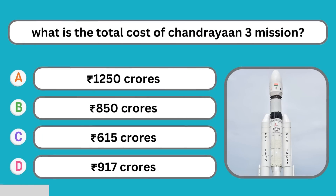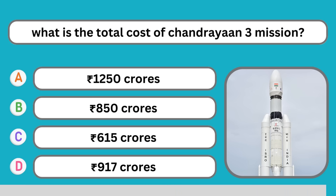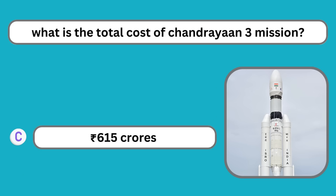What is the total cost of the Chandrayaan-3 mission? 615 crores Indian rupees.